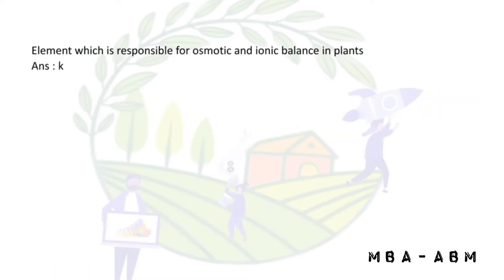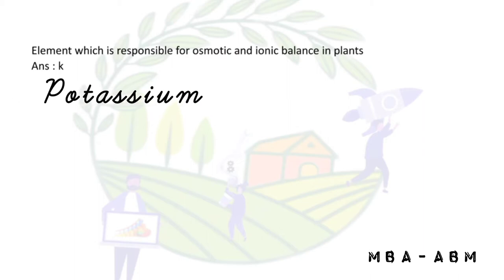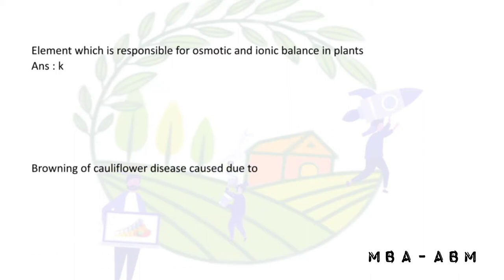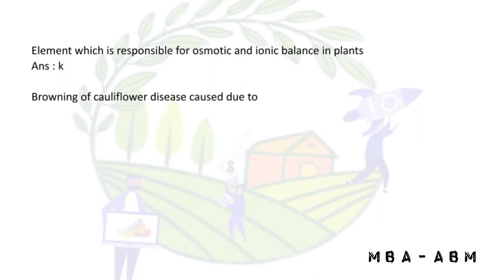Which element is responsible for osmotic and ionic balance in plants? That is K — potassium. Okay. Browning of cauliflower — this is caused due to what?